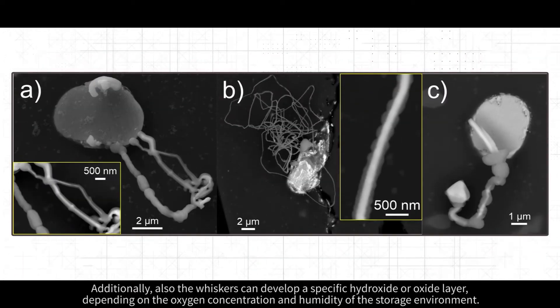Additionally, the whiskers can develop a specific hydroxide or oxide layer, depending on the oxygen concentration and humidity of the storage environment.